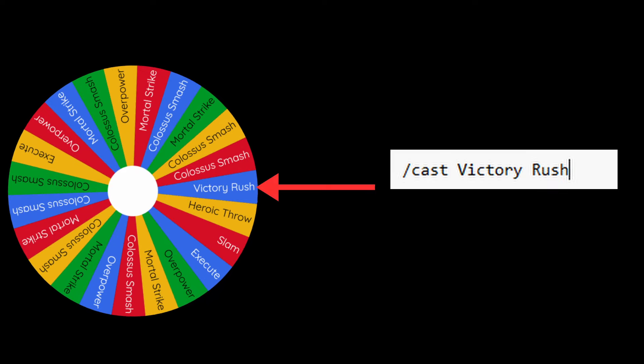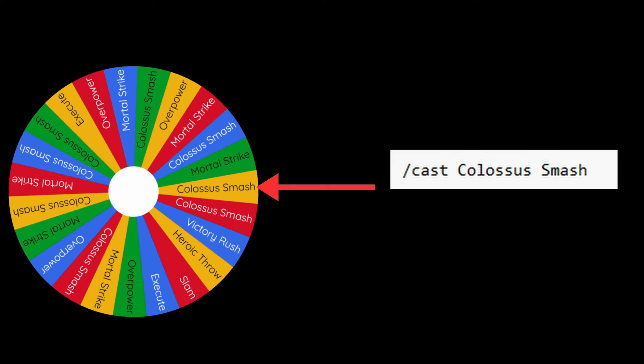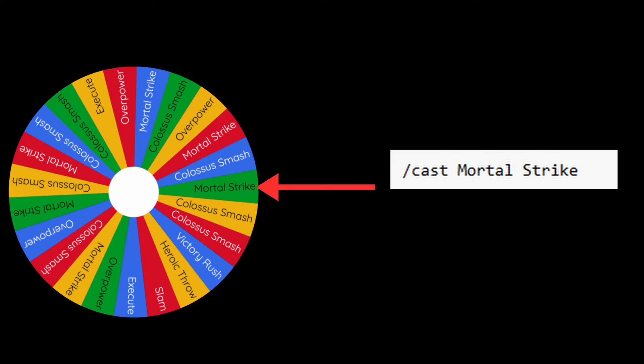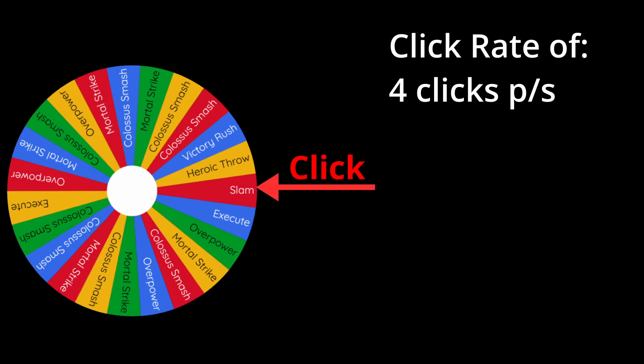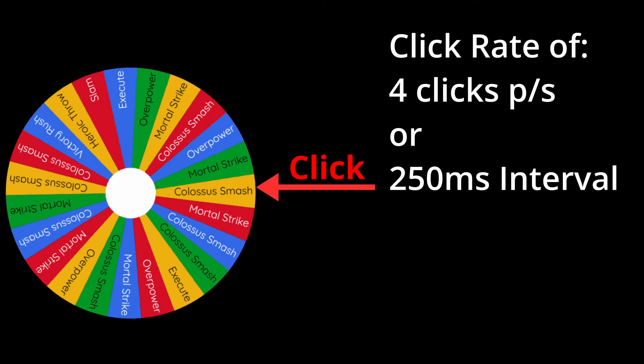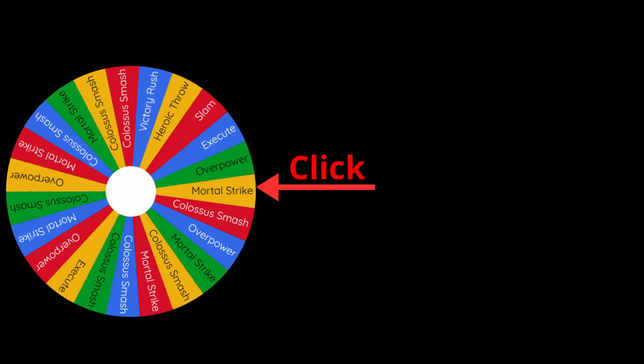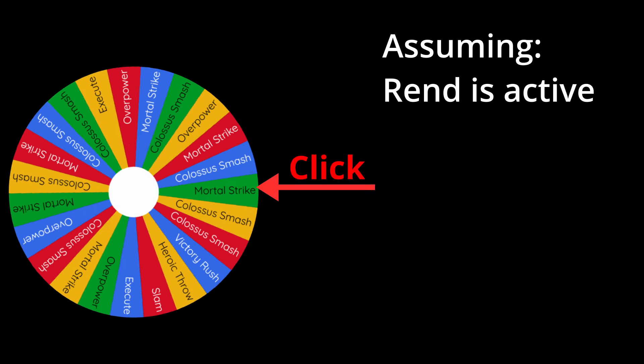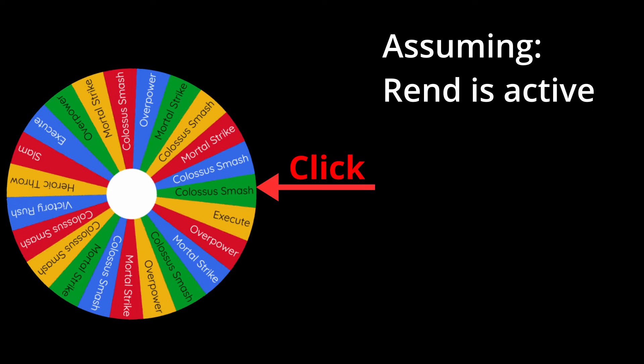But let's have a look at this in a different way. Here we have a wheel with every spell on it, from victory rush all the way through to heroic throw. The wheel is going to move one place every time the spell is attempted. For ease of presentation, I'll assume that the macro is being spammed consistently at 4 times per second throughout combat — you may also see this termed as 250 millisecond intervals.